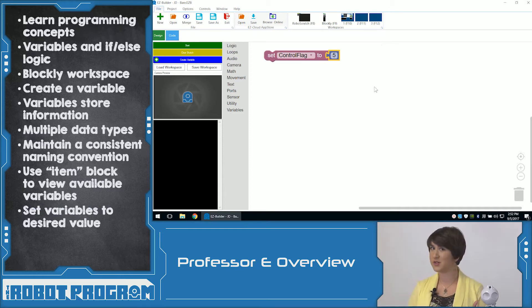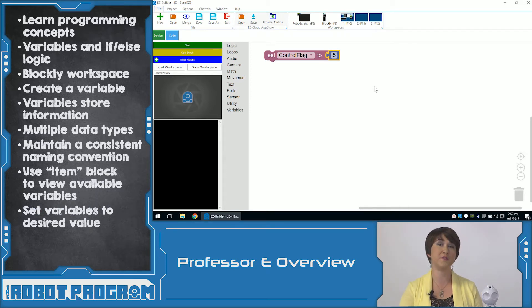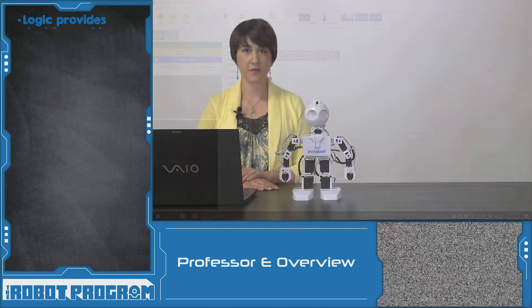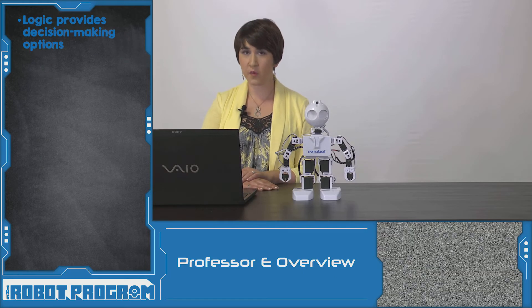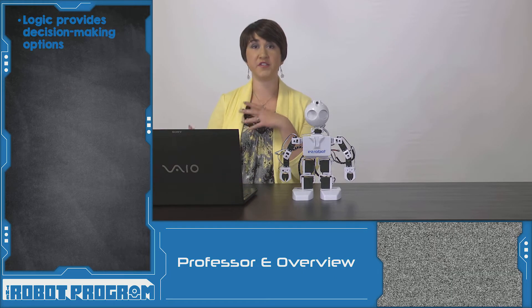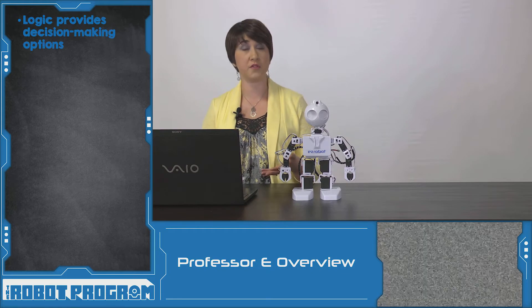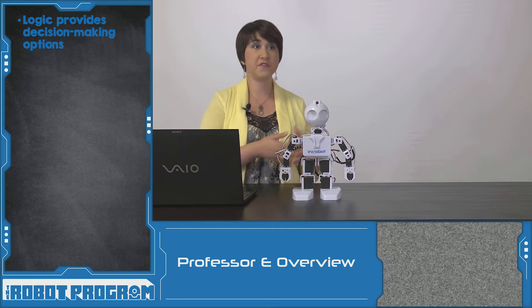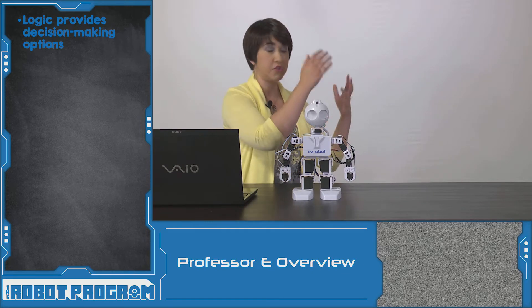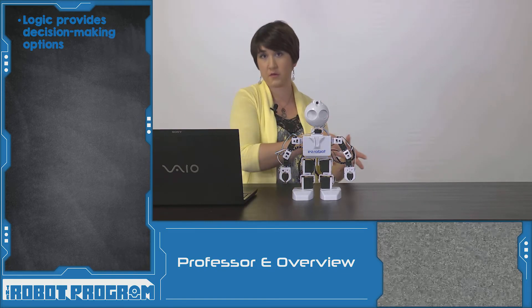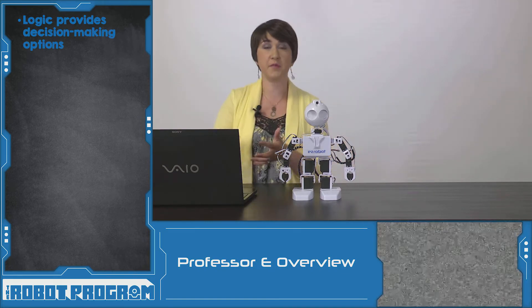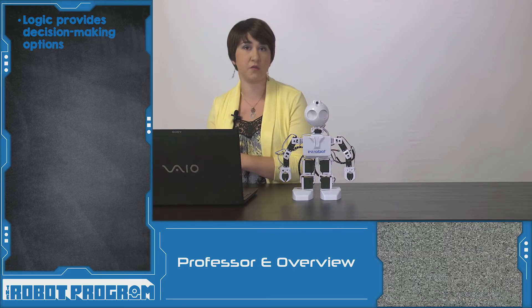So what can we actually do with our variables? Well, why don't we combine it with some if-else logic to actually control JD. Logic is a way to provide different decision-making branches for your code. If something happens, do this code. But if something else happens, do this code. It provides our robots with lots of different options.